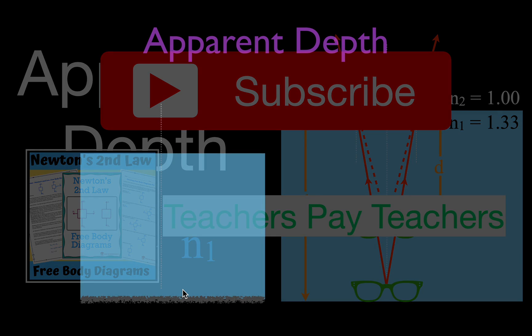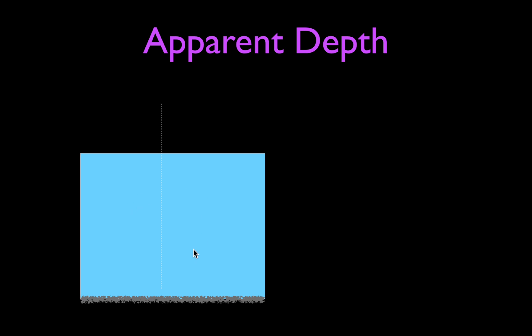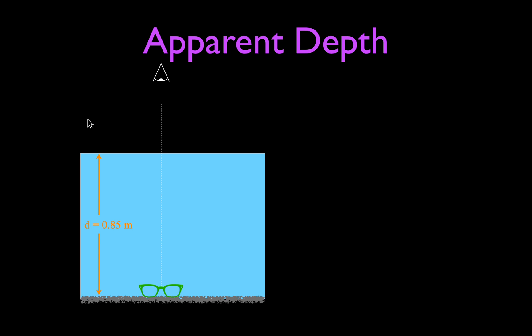Let's get started with apparent depth. Here we have a swimming pool — you're standing in the pool and your sunglasses slip out of your hand and fall to the bottom. You're standing right above them and looking straight down. The sunglasses are at an actual depth of 0.85 meters, but when you reach in to get them you keep missing them, because where you think they are, they aren't — they are not at the apparent depth, they're at the actual depth.